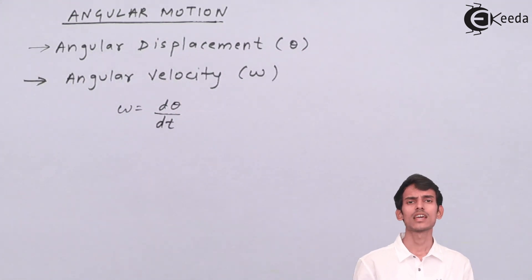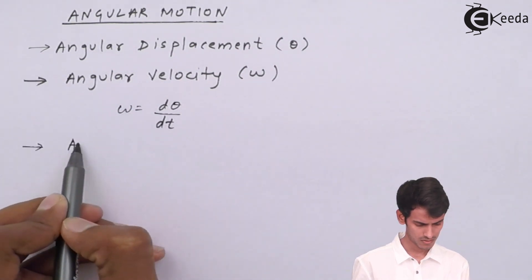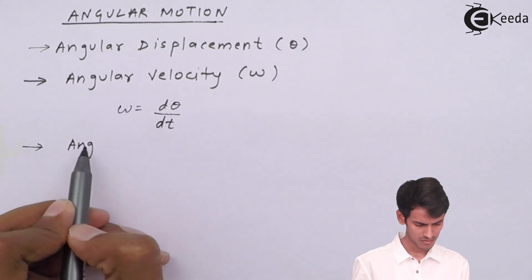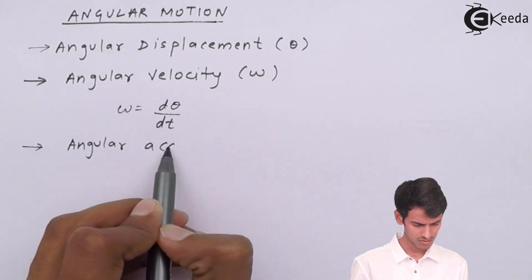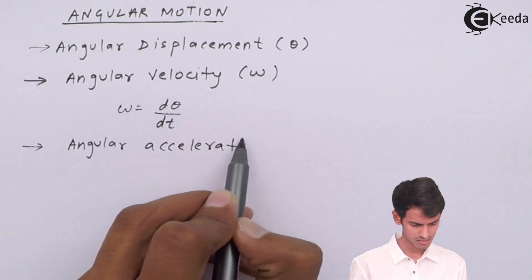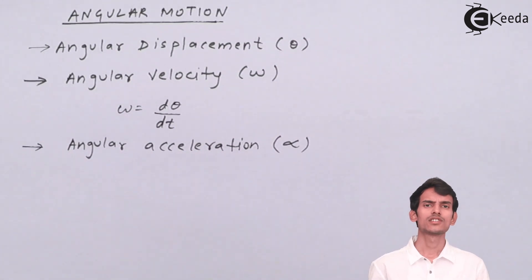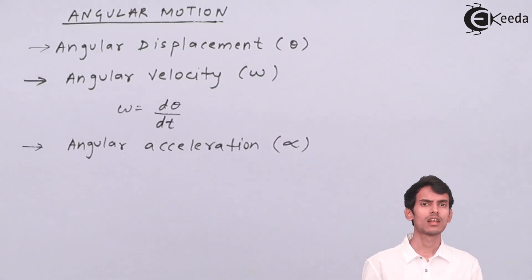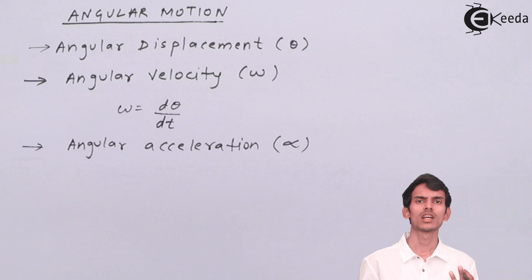The next term is angular acceleration, which is written by the Greek alphabet alpha. It is the rate of change of angular velocity, that is, d omega by dt.